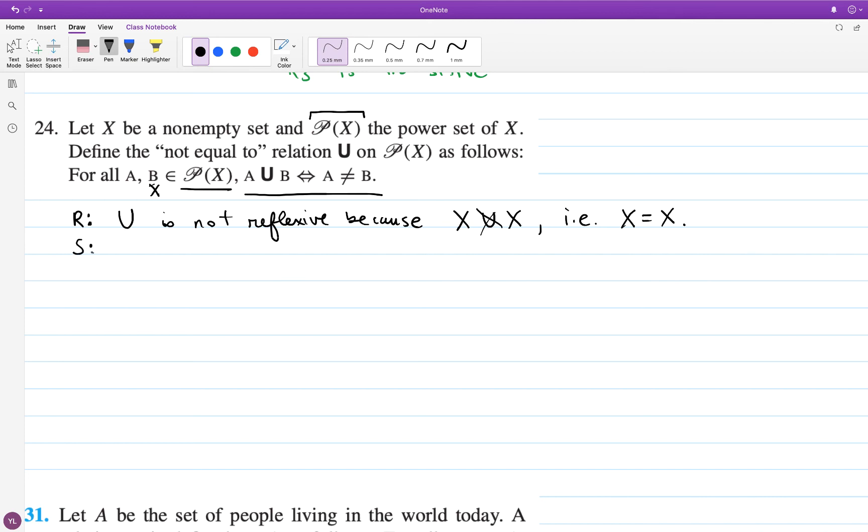Symmetric, yeah, actually it is. U is symmetric. You just got to think about it for a second. If A is related to B, then what that means is that A is not equal to B. But that means that B is not equal to A. So B is related to A. This is super awkward because my U is looking like a union. I'm just going to put a little curl on it because I don't want it to be confused with the union symbol. Let's imagine that they have used a better symbol for their relation.